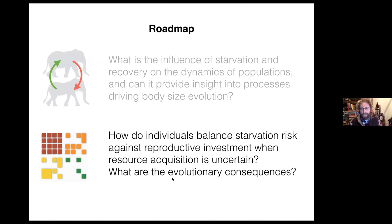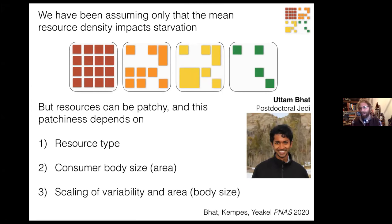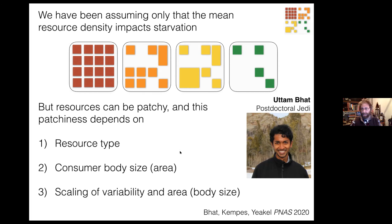Now I want to change gears to the second question: how do individuals balance starvation risk against reproductive investment when resource acquisition is uncertain? So far we have been assuming that only the mean resource density impacts starvation. But resources can be heterogeneous in space — they can be patchy — and this patchiness depends a lot on resource type. It also depends on the consumer's body size and the area over which it forages.